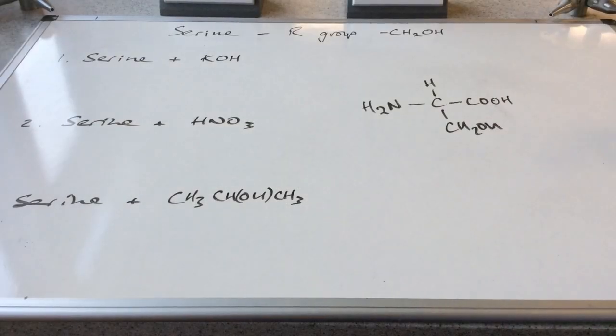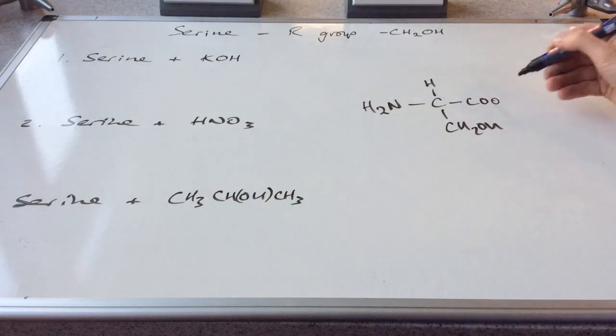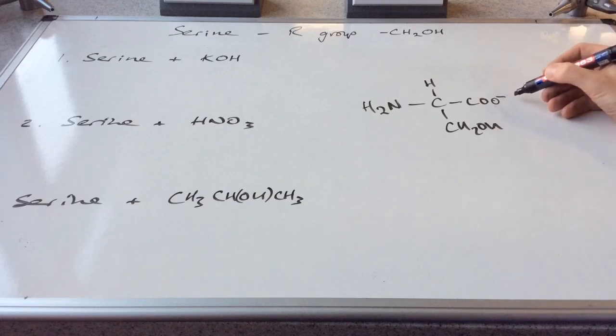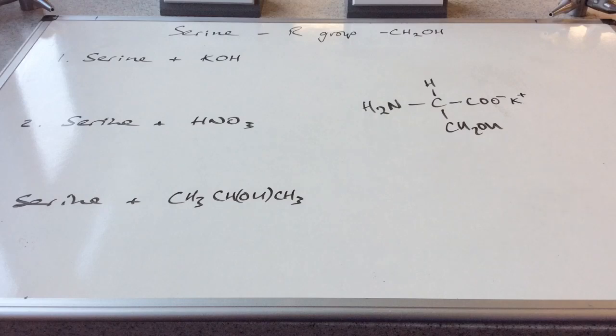So the first one, potassium hydroxide with serine. Potassium hydroxide is an alkali. It's going to react with the acid part of the amino acid. And so we're going to get salt and water. So the salt that's formed is going to be that negatively charged ion. And the positive ion in this case would be K+. So that would be the structure of the product of reaction one. You'd also get a water molecule produced in that one.